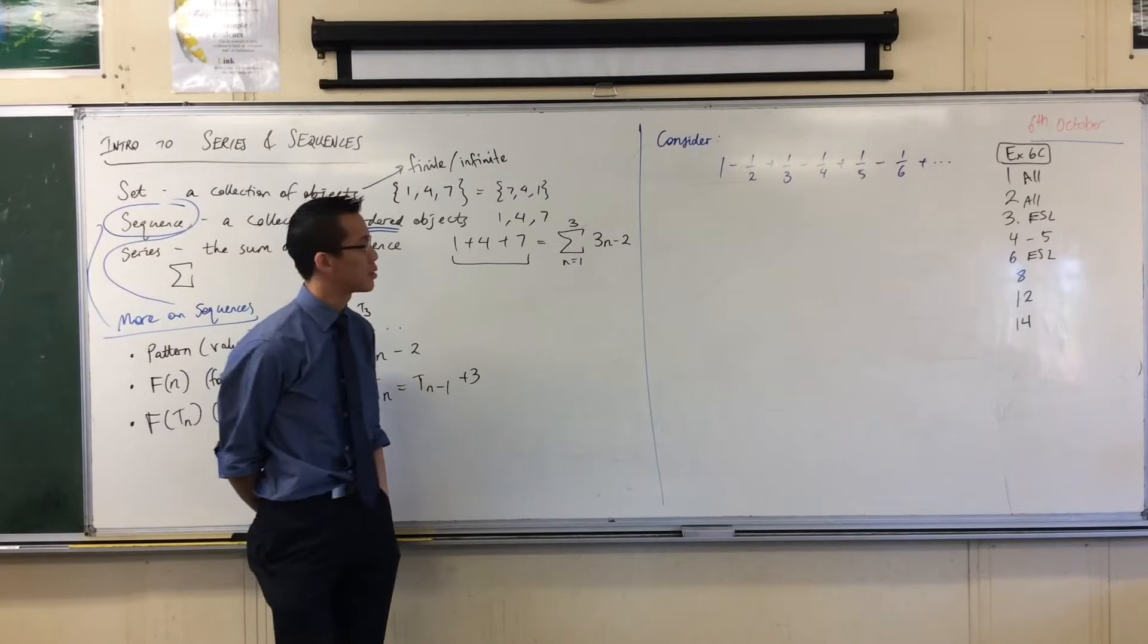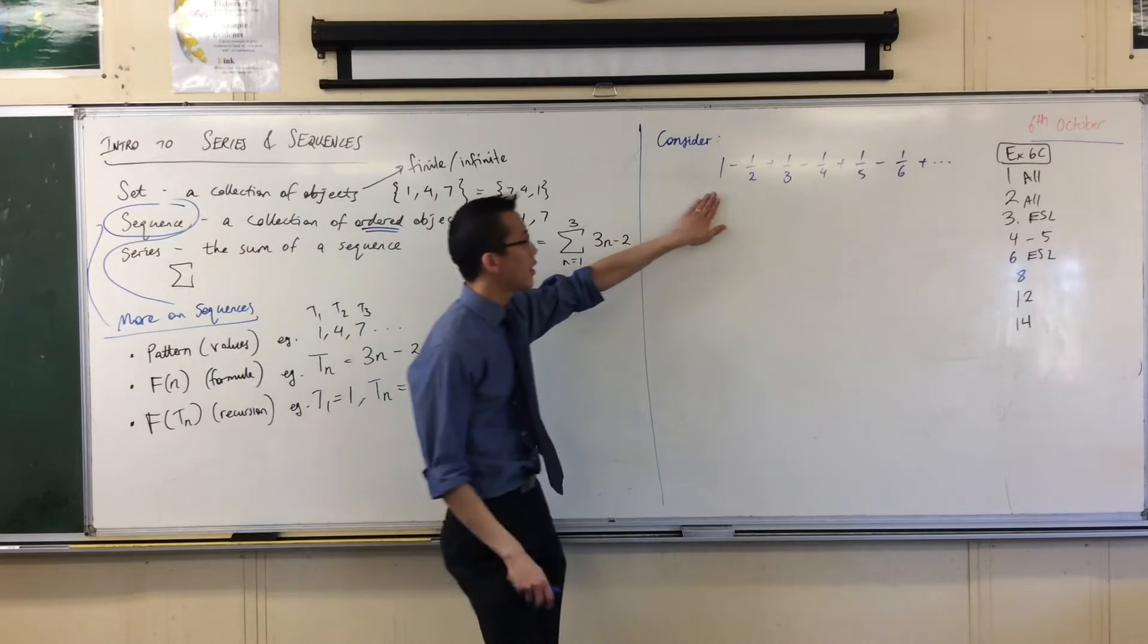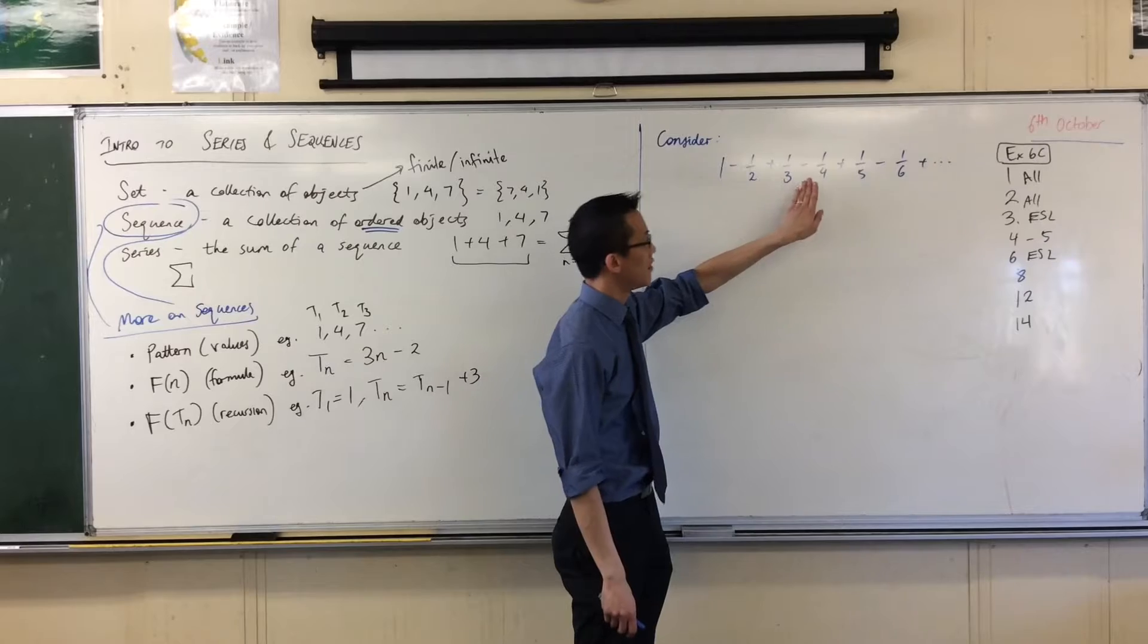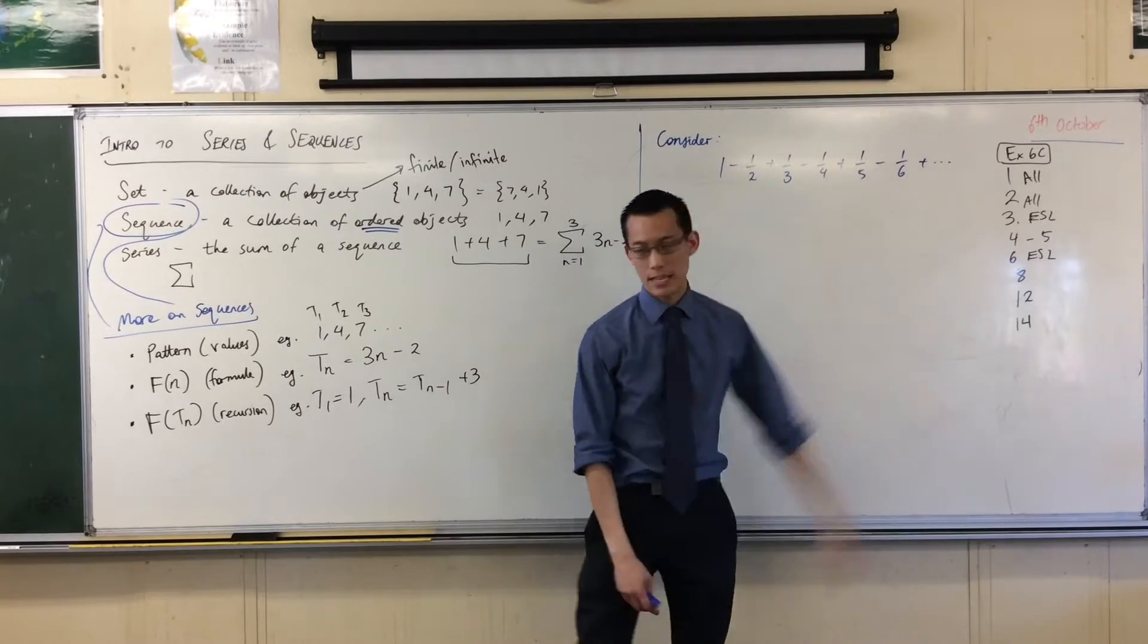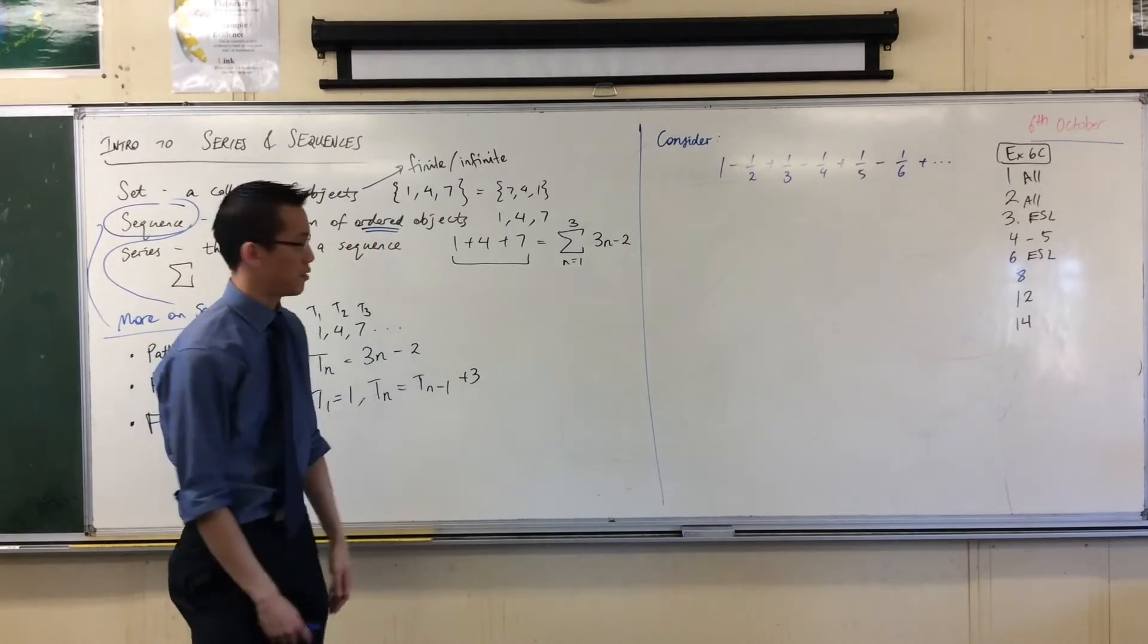This is a series, right? So it's a sequence: one, negative a half, a third, negative a quarter, a fifth, negative a sixth, and I'm just summing it. So I've turned it into a series.